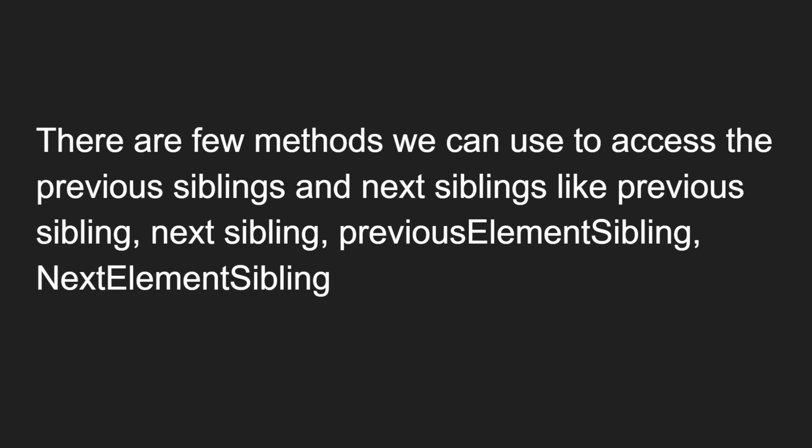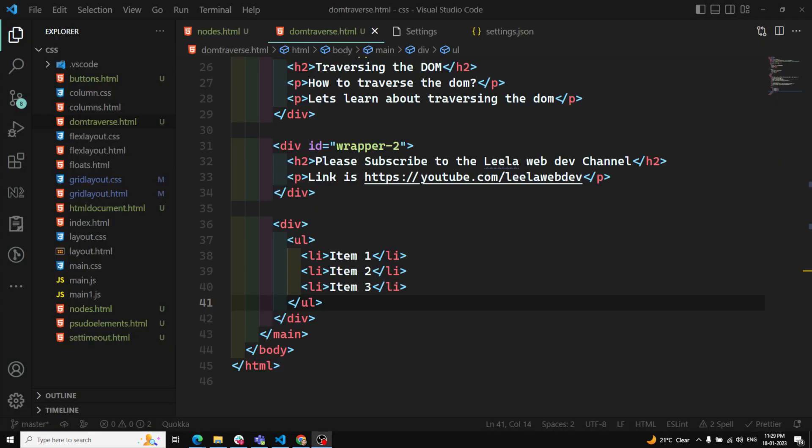There are a few methods we can use to access the previous and next siblings: `previousSibling`, `nextSibling`, `previousElementSibling`, and `nextElementSibling`. Most developers don't know the difference between these methods. In this video we will see what the major difference is between all of them.